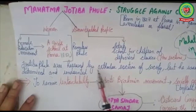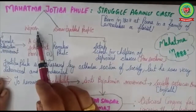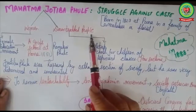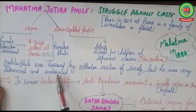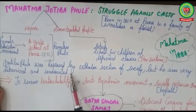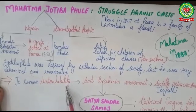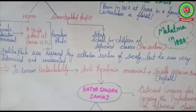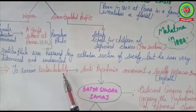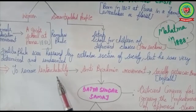Jyotiba Phule was harassed by the orthodox and conservative section of society, who did not believe in women's education or removing the caste system. But he was very determined and undaunted — not afraid of the activities of the conservative section. Untouchability was a practice in ancient and medieval India where upper caste Brahmins considered themselves superior, so their wealth and temples were kept separate from the lower caste people.